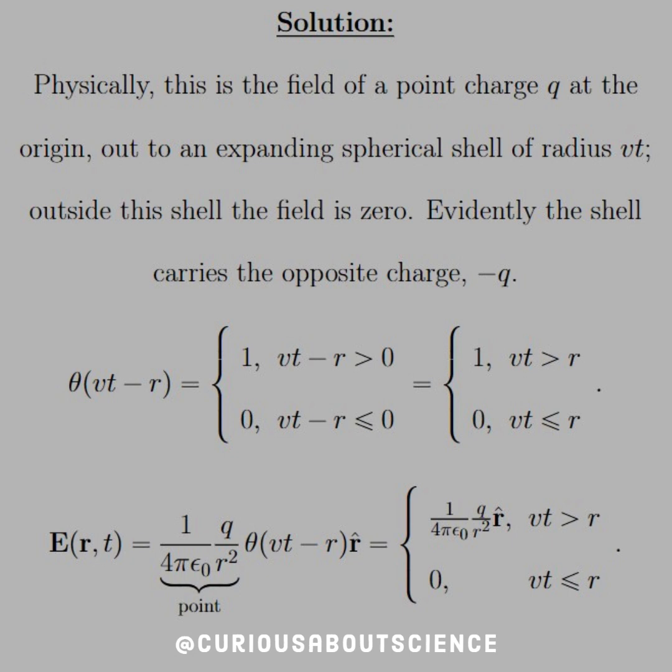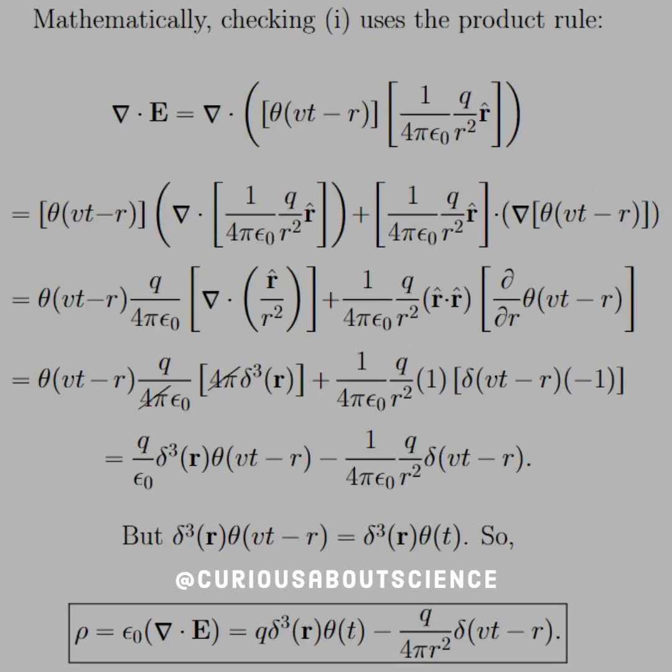So let's write out what the step function is. The step function for vt minus r, we have to plug that into where we had x in its definition, and we see that we have one where v of t is greater than r, and zero for v of t less than r. And if we actually define the field in this piecewise definition, we see that that's the point charge, and we have a point charge for v of t greater than r, and we have zero for v of t less than r. There's a time component and a distance component put together via the velocity.